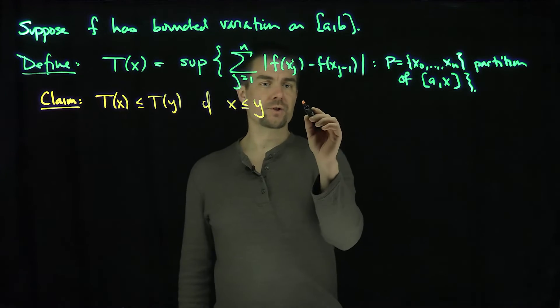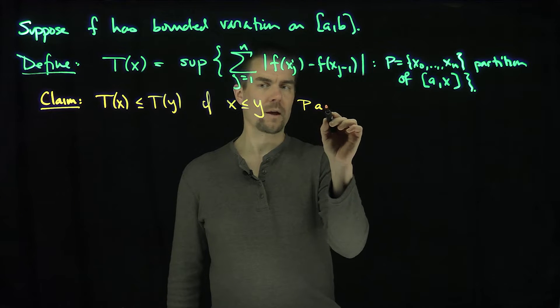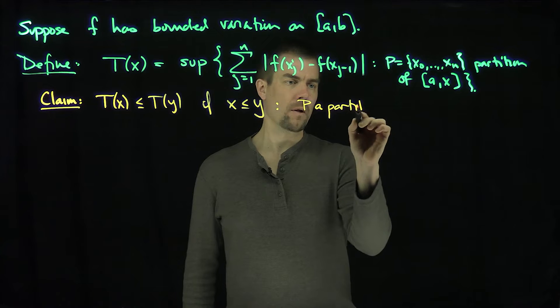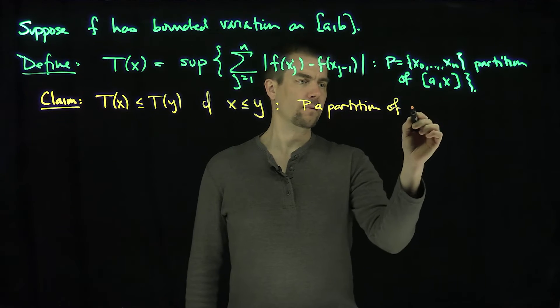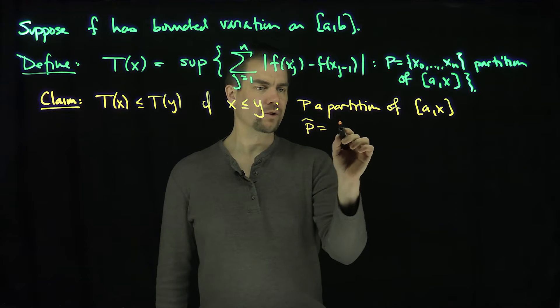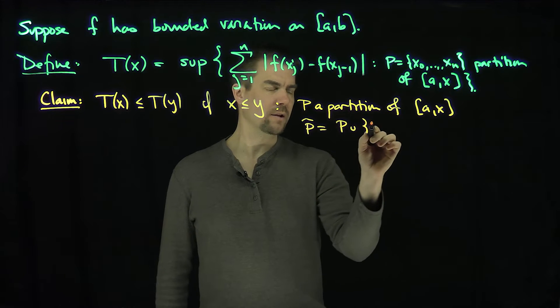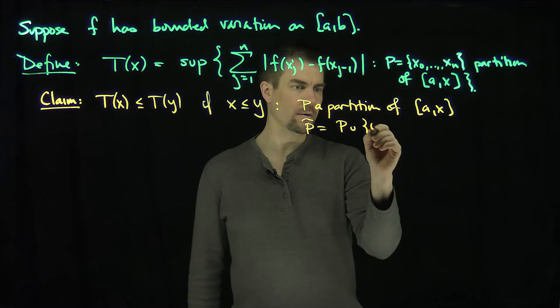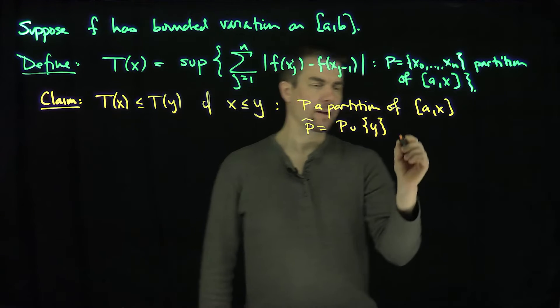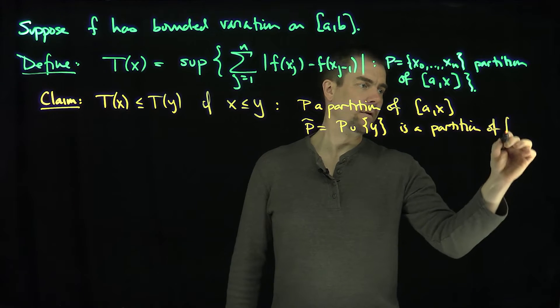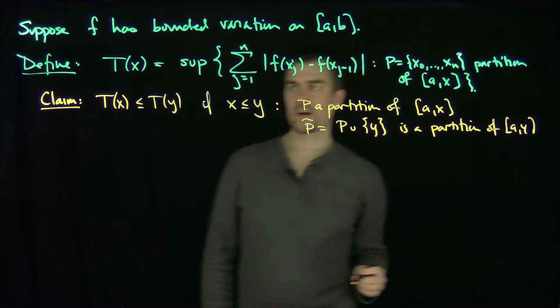Of course, we can see it because if P is a partition of A to x, then P tilde, which is P union just the point y, is a partition of A to y.